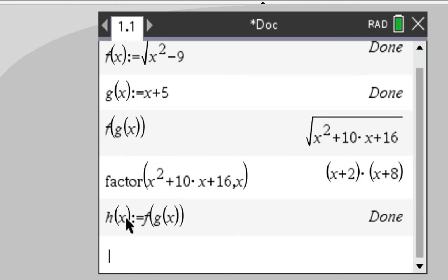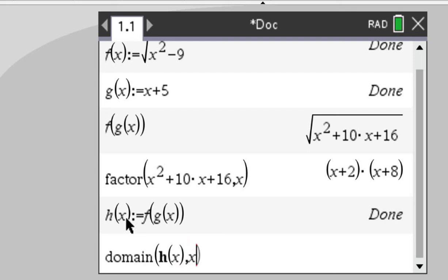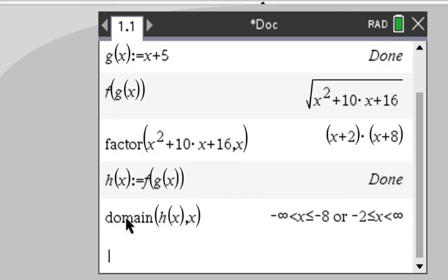Then there's a command you can type in: domain, then you can type in h of x comma x and type in enter. That is the range, which we saw in the previous video is from minus infinity to minus 8 or minus 2 to positive infinity.